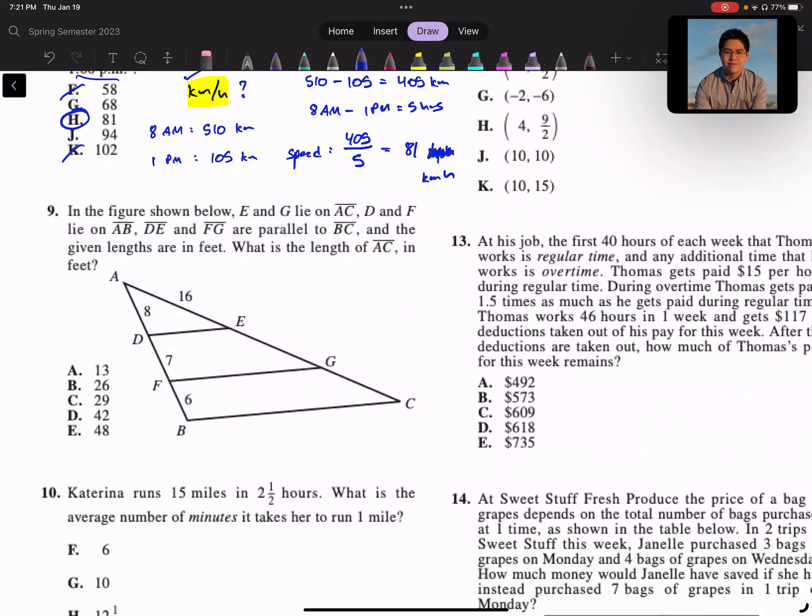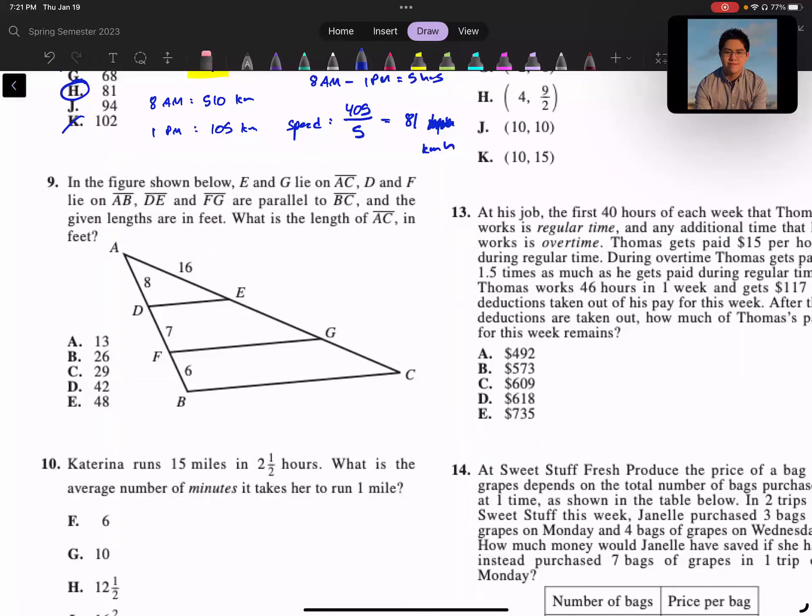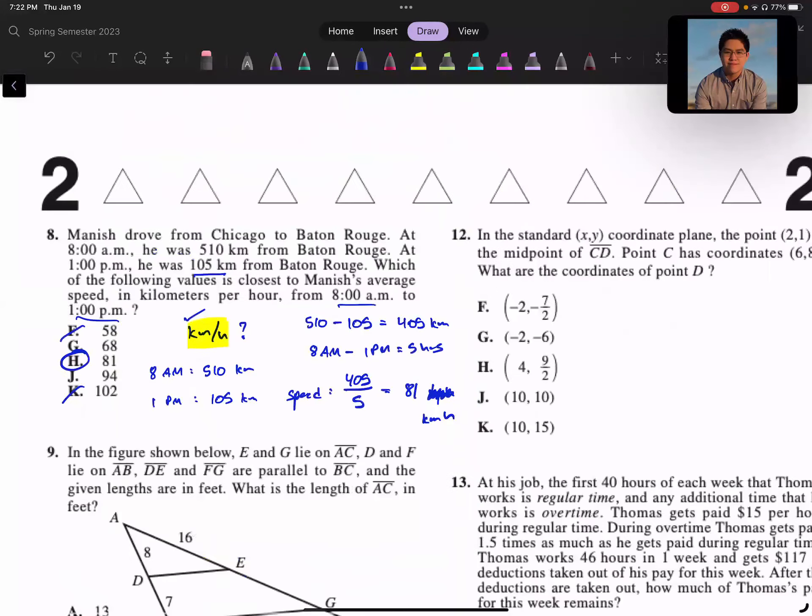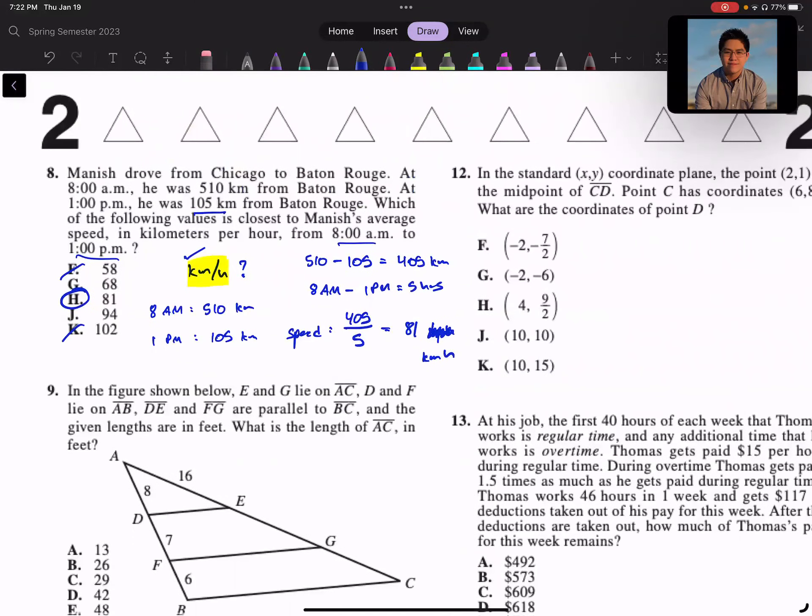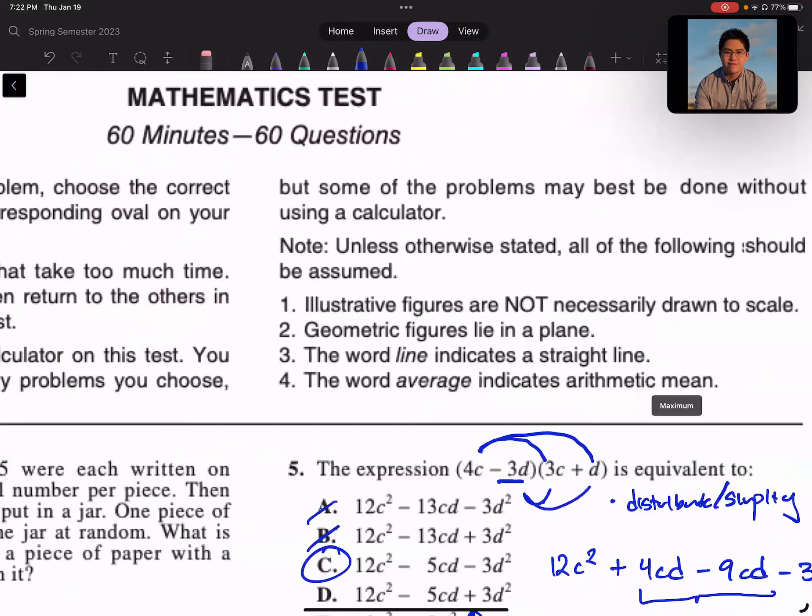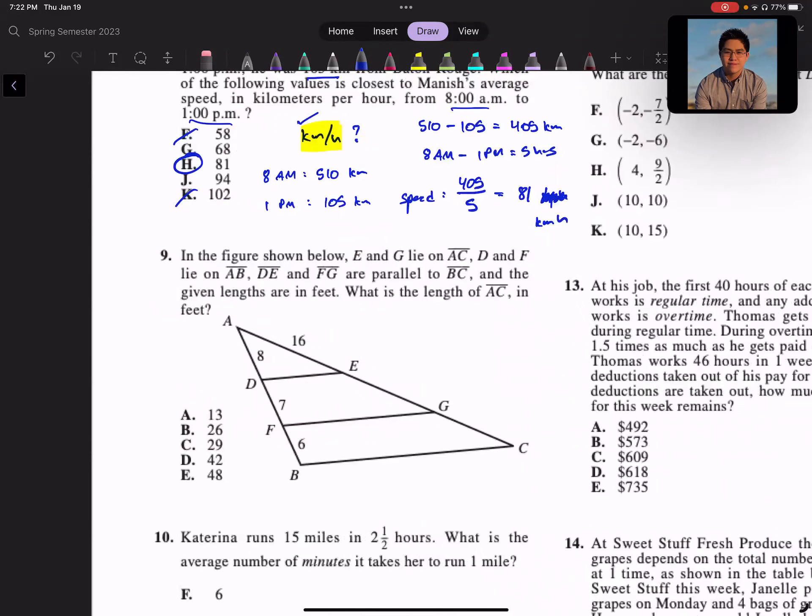Moving on to question 9. In the figure below, E and G lie on AC. D and F lie on AB. DE and FG are parallel to BC, and the given lengths are in feet. What is the length of AC in feet? Okay, so I'll bring a caveat here. When you see a similar figure in the ACT, about 99 times out of 100, if they look similar, they probably are, because they are drawn to scale. Most of the time they're very well drawn to scale. And so what I see here in this case is a very classical example. Just from parallel lines, you can use like AA. You don't need to prove it, but ADE is similar to AFG because of parallel lines. But you don't need to know that. All you need to know from this is that they're similar.